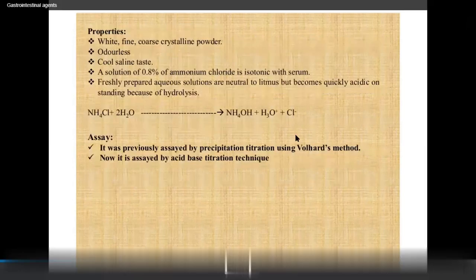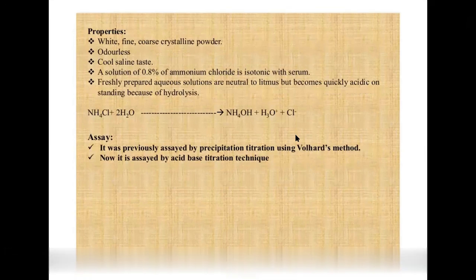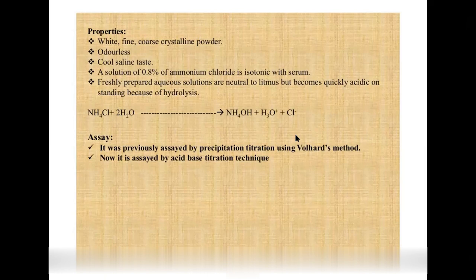Ammonium chloride properties: it is a white, fine to coarse crystalline powder, odorless, with a cool saline taste. A 0.8% solution of ammonium chloride is isotonic with serum. A freshly prepared aqueous solution is neutral to litmus but becomes actively acidic on standing due to hydrolysis: NH4Cl in water gives NH4OH plus H3O+ plus chloride ions.